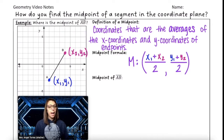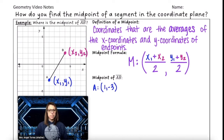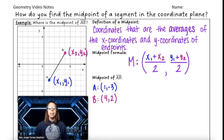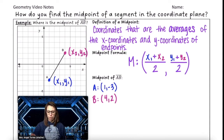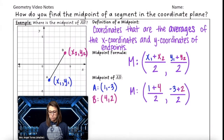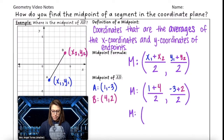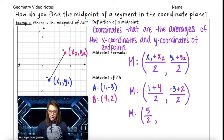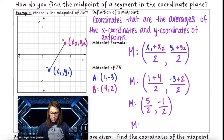First we need to identify the actual coordinates of A and B. It looks like on our graph the coordinates of A are at (1, -3) and the coordinates of B are at (4, 2). Now all we have to do is plug those numbers into our midpoint formula. 1 plus 4 is 5, so 5 divided by 2, and -3 plus 2 is -1 divided by 2. So the midpoint here would be at 2.5 and -0.5.